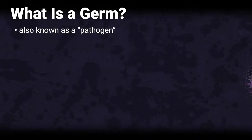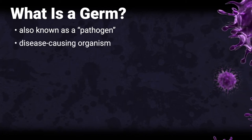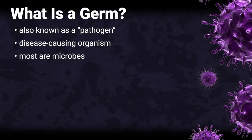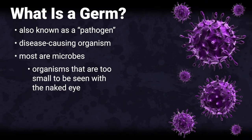What is a germ? A germ is also known as a pathogen. A pathogen is a disease-causing organism. Most pathogens are microbes — organisms that are too small to be seen with the naked eye. Most microbes are benign, which means they don't do much of anything, or beneficial, which means they are helpful. For example, bacteria in our stomach help digest food.